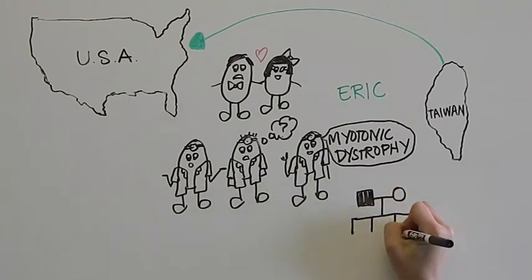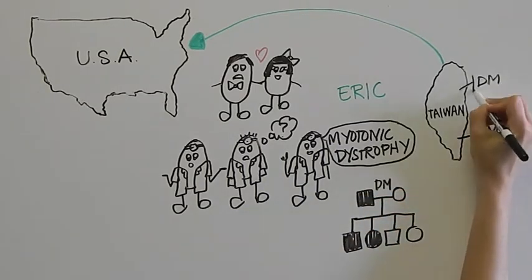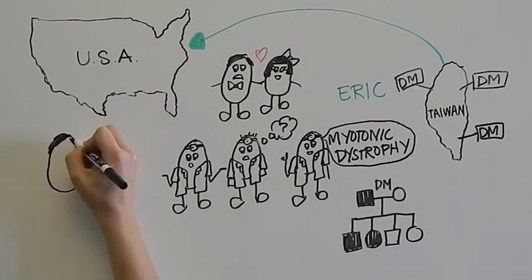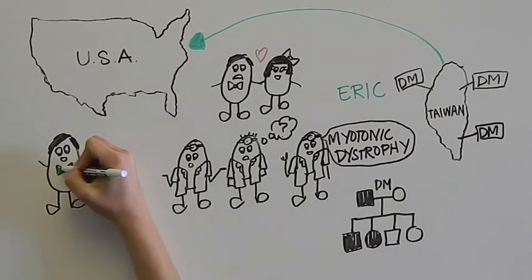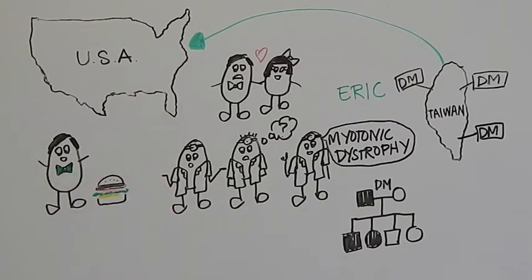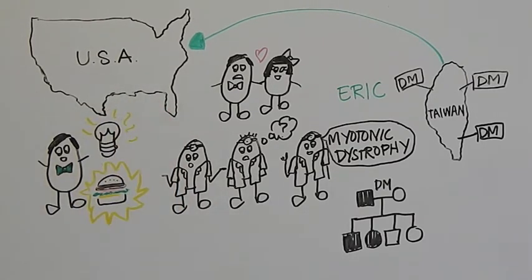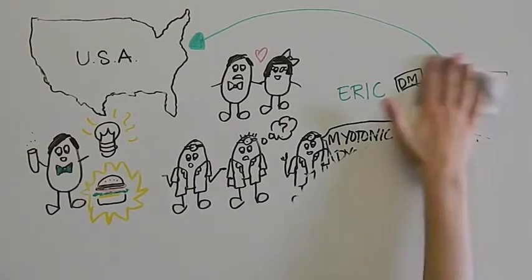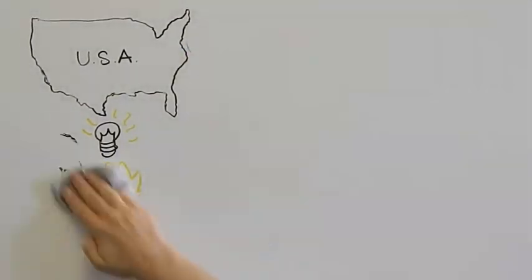Because myotonic dystrophy is a dominant genetic disease, many of Eric's extended family members in Australia and Taiwan are also affected. It took many years, and one very significant mushroom Swiss Eureka burger, for Eric to realize that becoming a muscular dystrophy scientist and advocate would empower him to make a difference for his family and so many others.